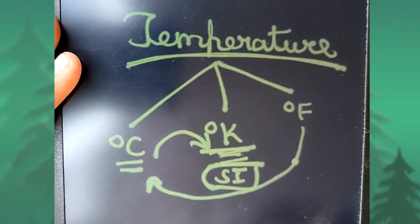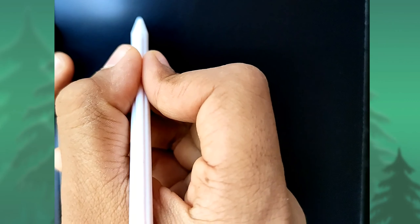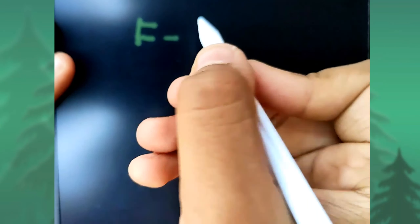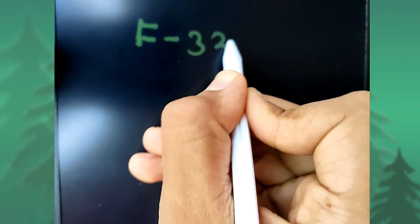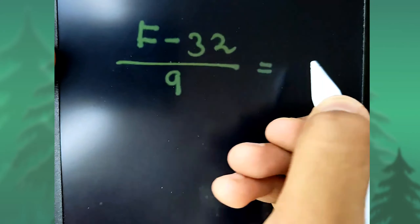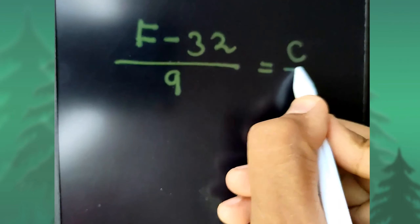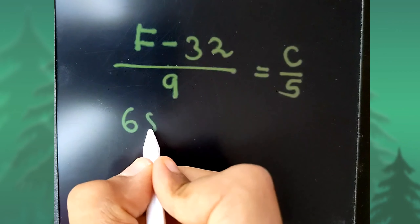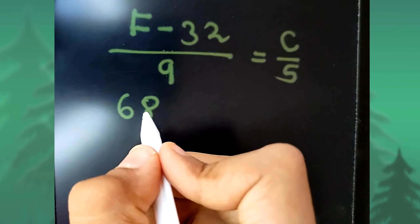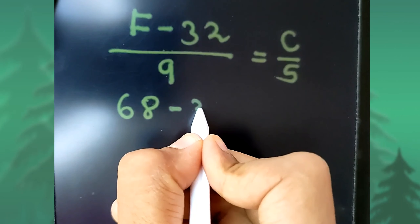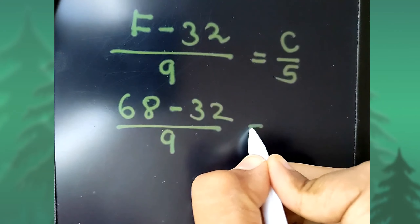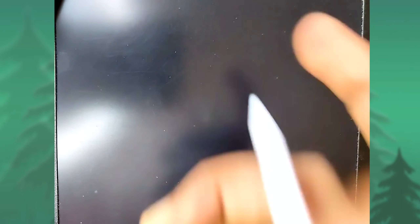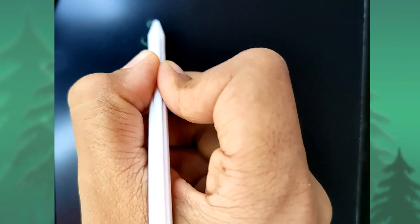The formula to convert Fahrenheit into Celsius is: (F − 32) / 9 = C / 5. Let's take for example 68 degree Fahrenheit. So: (68 − 32) / 9 = C / 5. And 68 minus 32 is nothing but 36, so we get 36 / 9 = C / 5.